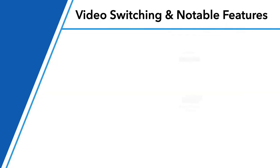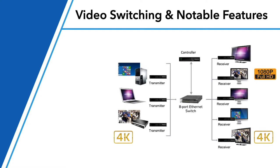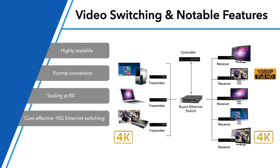Video switching using Terra like a matrix router is a powerful capability. You add a Terra controller and your 10 gig switch — now I can route video from transmitter to receiver. I can scale, I can go native. It's a great attribute and feature set of Terra.